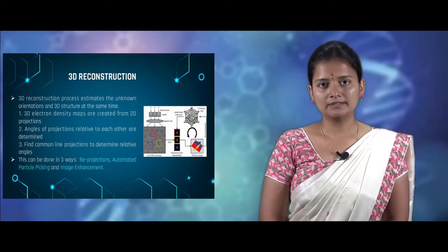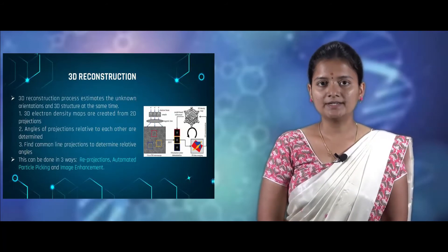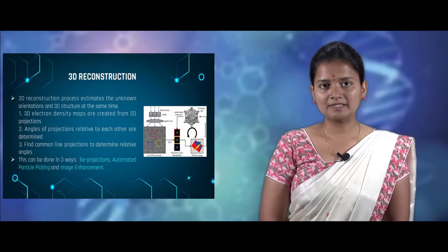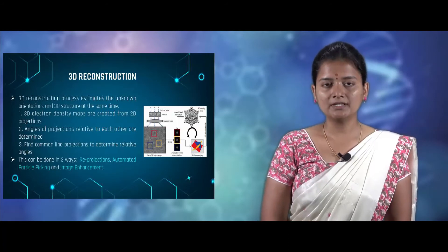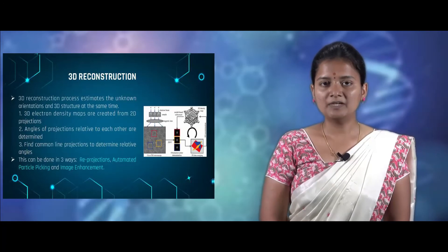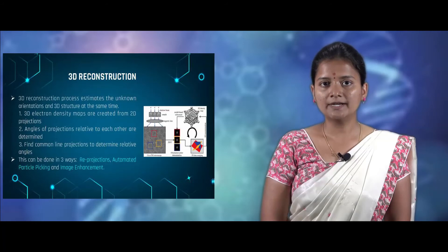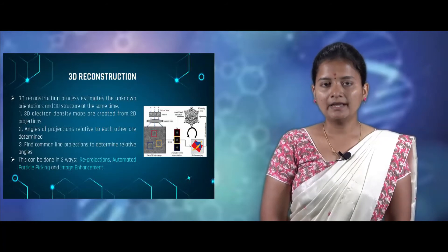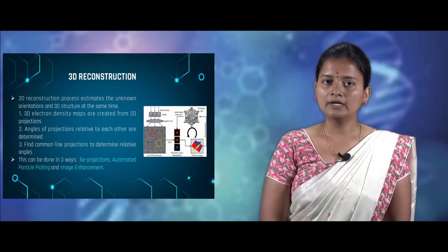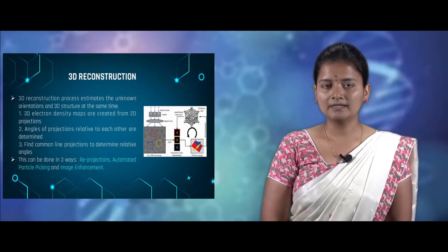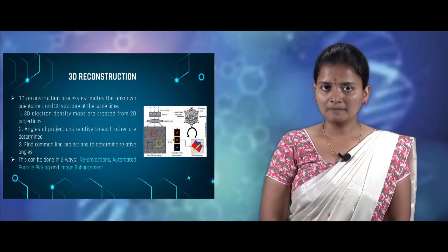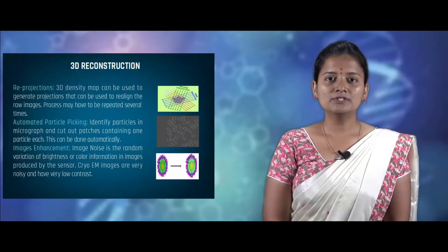Now we look at 3D reconstruction. In 3D reconstruction, we estimate the unknown orientation and 3D structure of the molecule. A 3D electron density map is generated from 2D projections, and the angles of projection related to each other are determined. We also find the common line projection for each particle. This can be done in three ways: reprojection, automated particle picking, and image enhancement.